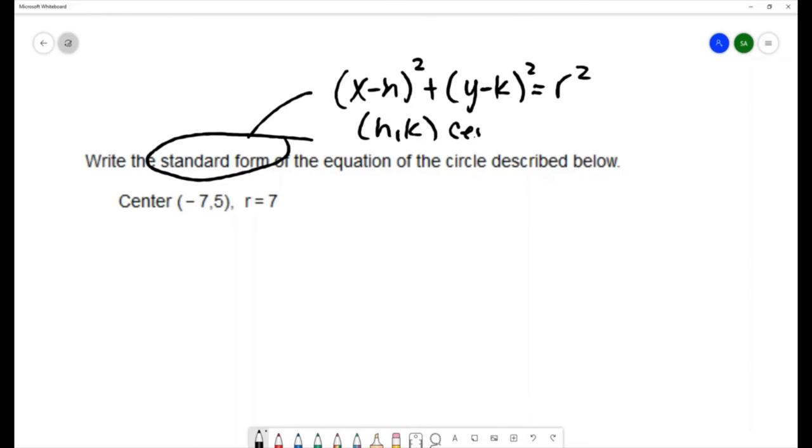So for ours, we have h being -7 and k being 5, and we have the value of r being 7. I'm going to substitute these values into the equation of the standard form of a circle.